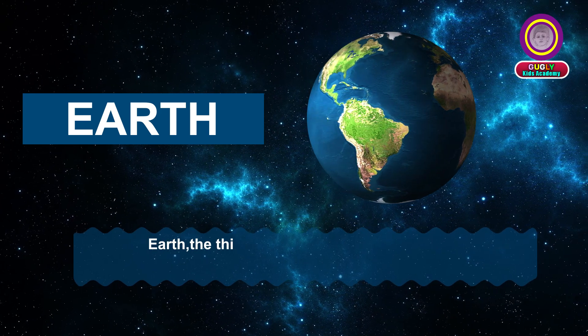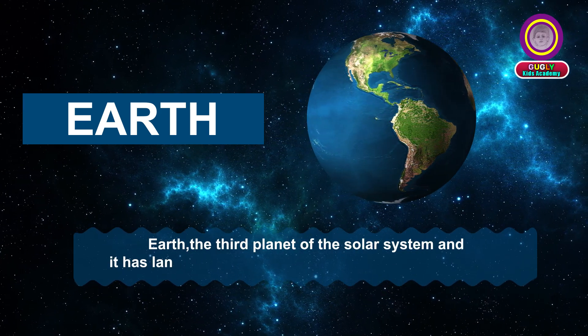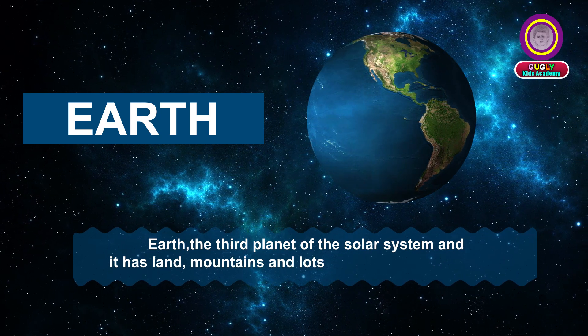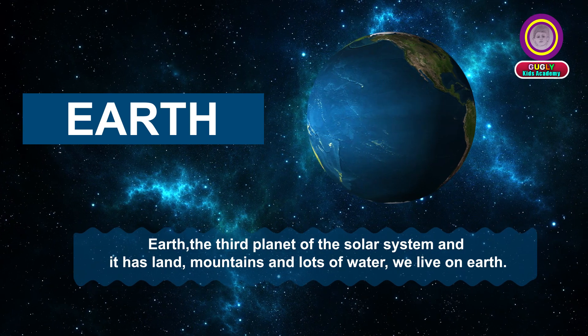Earth is the third planet of the solar system and it has land, mountains and lots of water. We live on Earth.